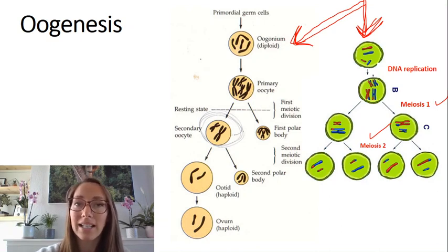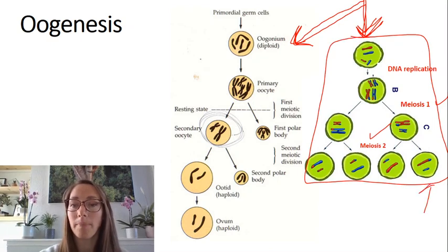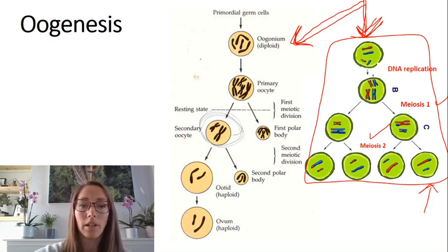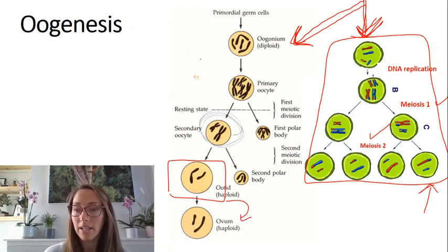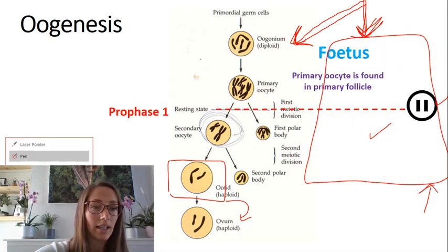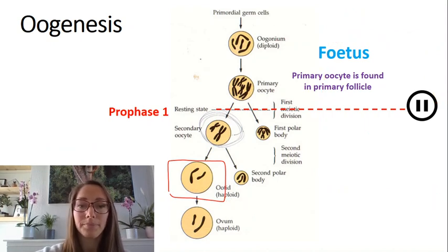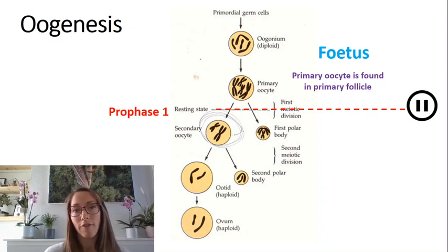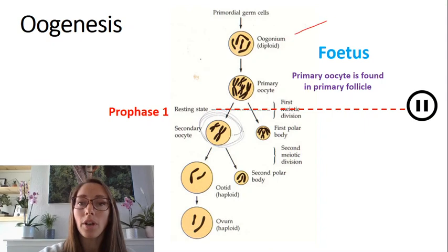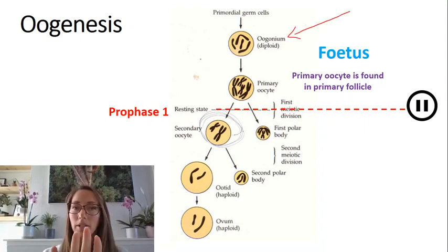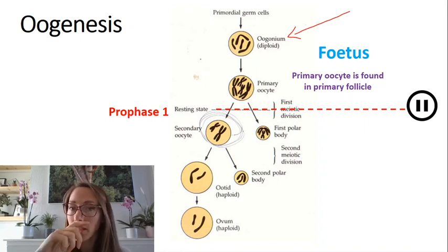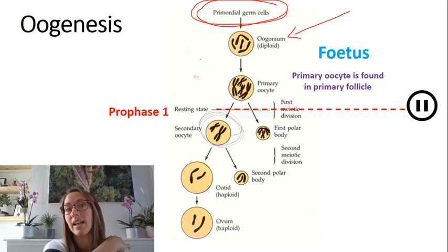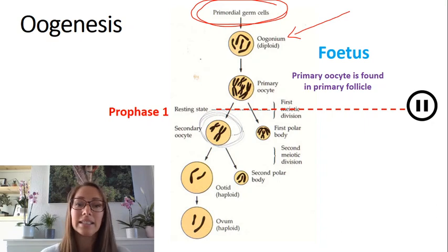Instead, we get one larger ootid that can potentially develop into an ovum if fertilized by a sperm. Looking at a female's ovaries, they contain lots of oogonia. These are diploid cells that have divided from primordial germ cells — stem cells that will turn into gametes, or ovum in this case. The oogonia undergo DNA replication, which doubles the DNA content before cell division, and then develop into primary oocytes, where meiosis will begin.